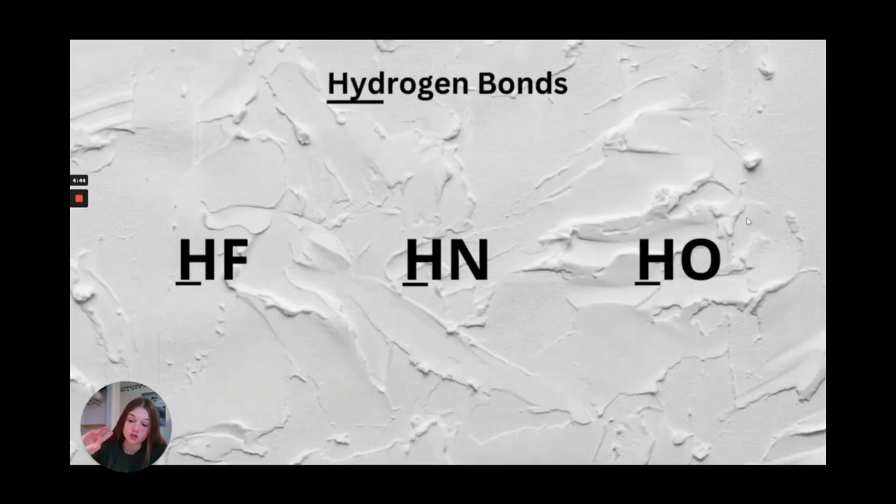The third and strongest of the intermolecular bonds is the hydrogen bonds, and this is when hydrogen bonds to fluorine, nitrogen, or oxygen. These three atoms are all very electronegative, which means that they hold on and pull electrons a lot, so this creates the strong bonds.